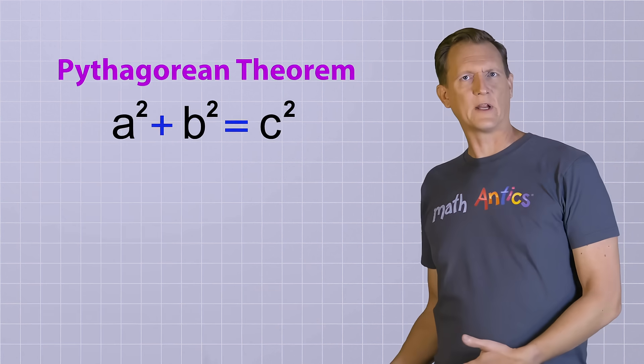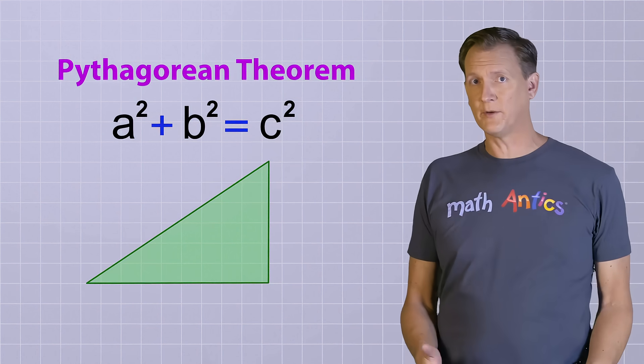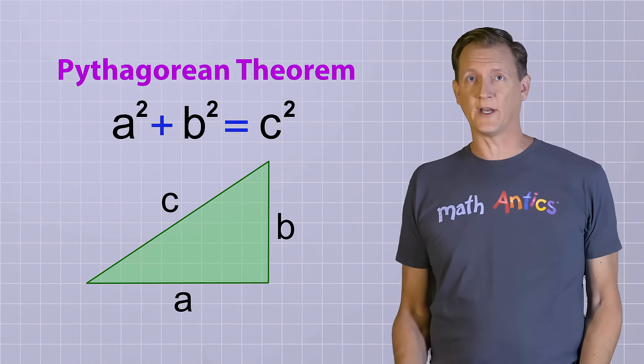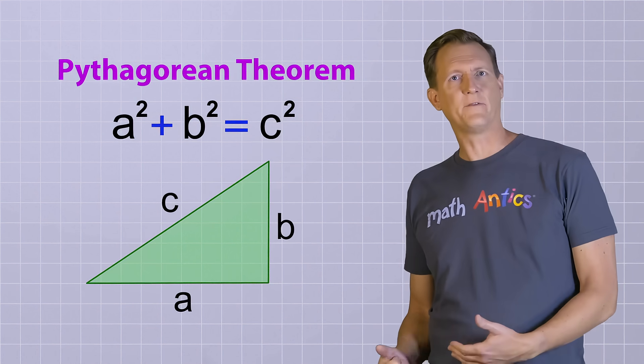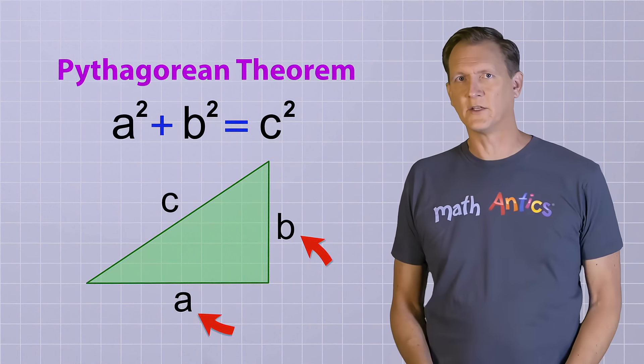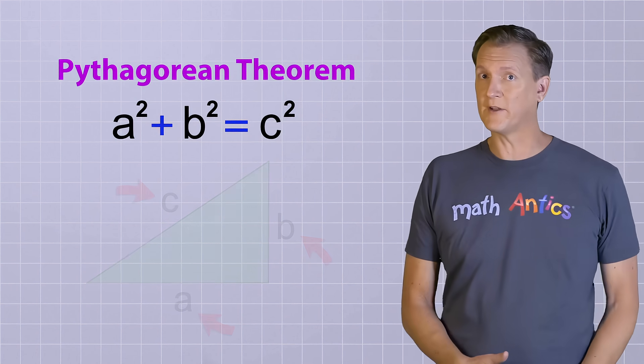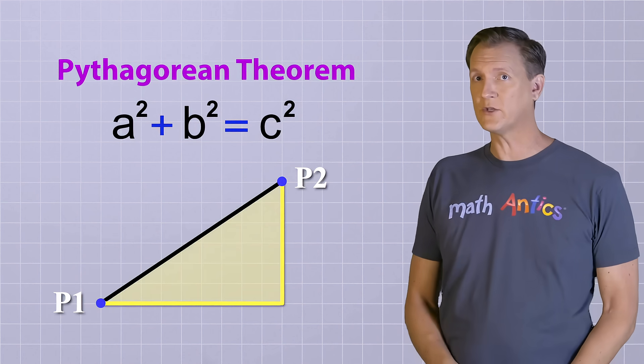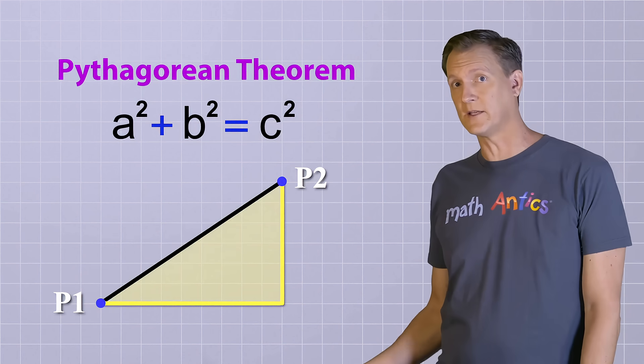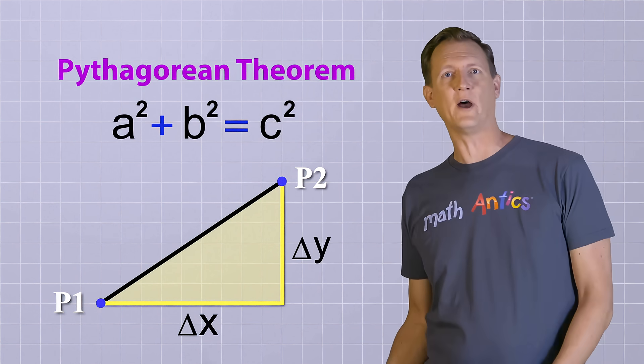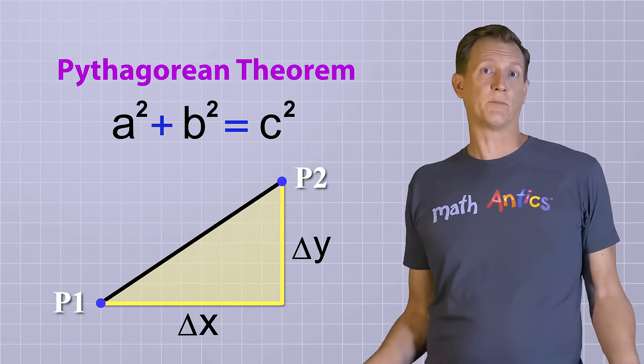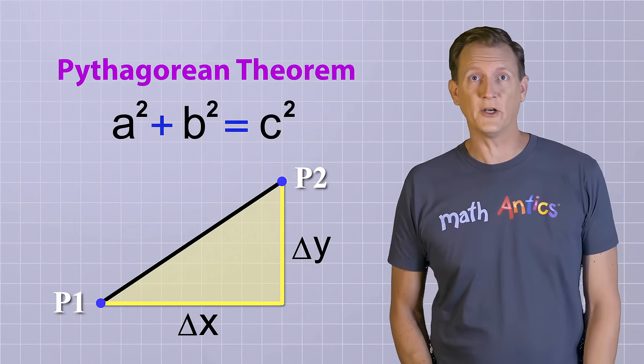Do you remember how the Pythagorean Theorem tells us the relationship between the three sides of any right triangle? That means that if you know the lengths of two of the sides, you can calculate the length of the third side. Well, we just saw that if you turn a line segment into a right triangle, you can calculate the lengths of two sides which would be delta x and delta y, right? So we can just plug those values into the Pythagorean Theorem.